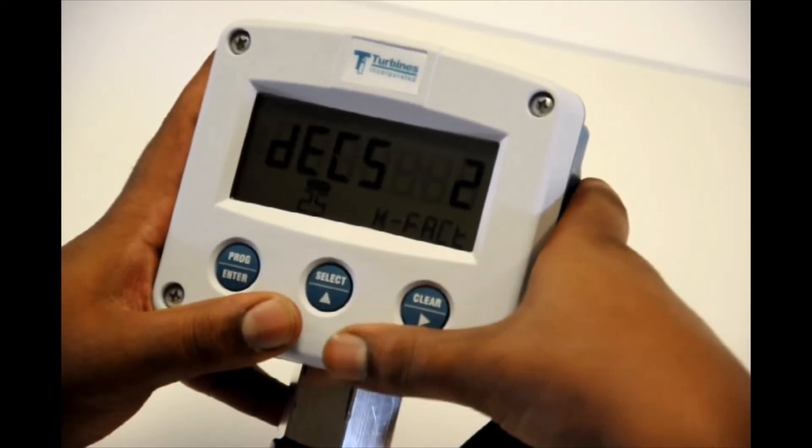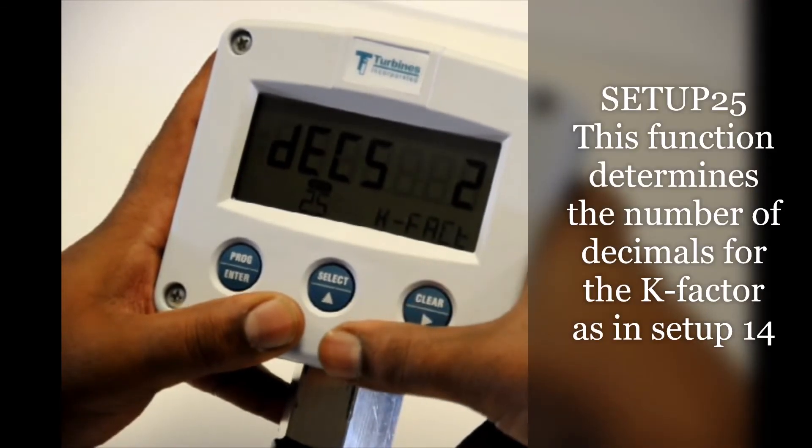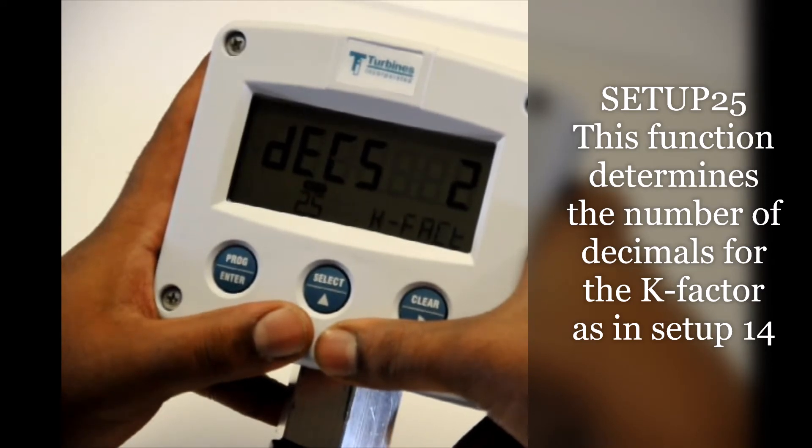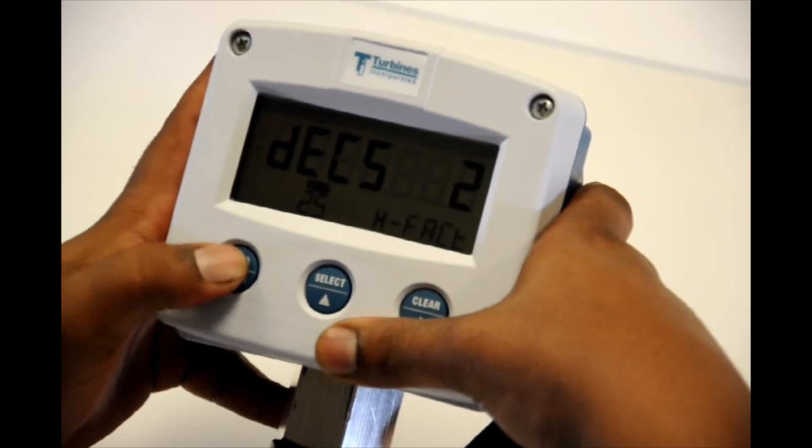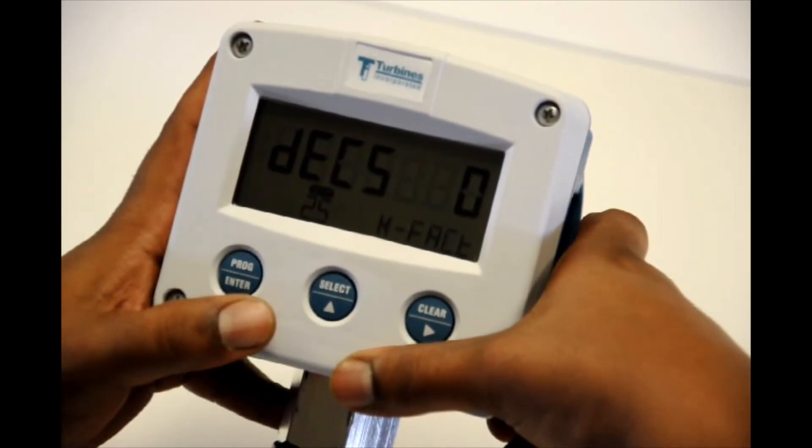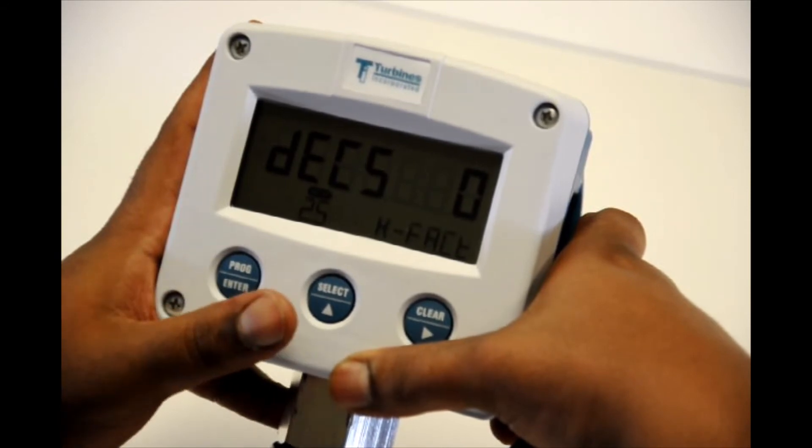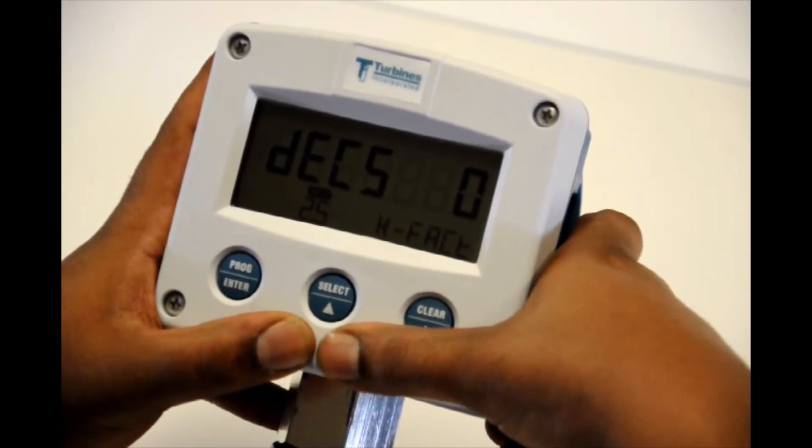Hit select. If we wanted to put a decimal place in that K factor we could do so here. For thirteen four forty it is a whole number so we don't need a decimal place. So to change that to a zero program enter. Clear. Program enter. This locks it in. Now it takes the decimals out of our K factor to read as a whole number. Now hit select.